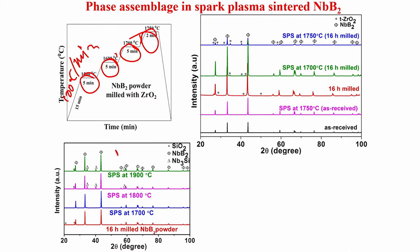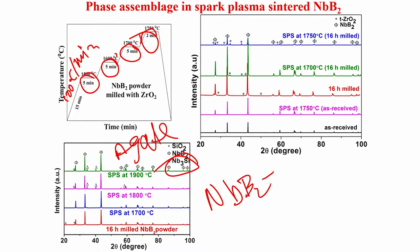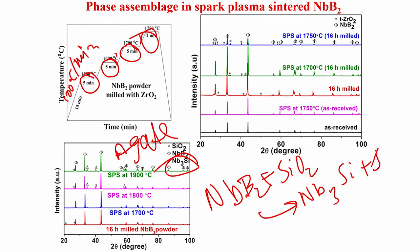When agate is used as the ball mill medium, there is a second phase apart from silica — a third phase called Nb3Si. What happens is niobium boride reacts with silica and forms Nb3Si and boron oxide during spark plasma sintering of this material.